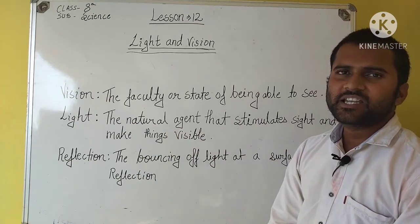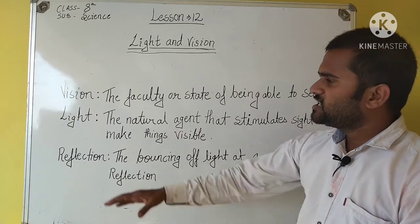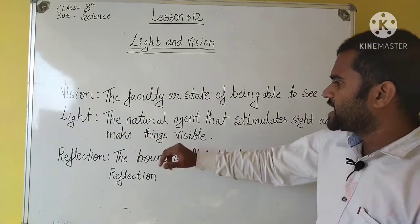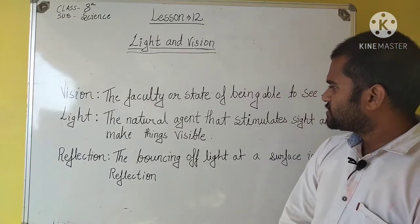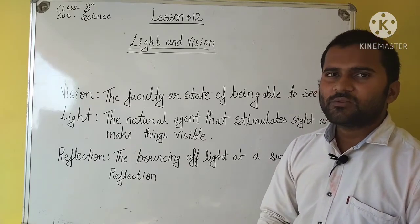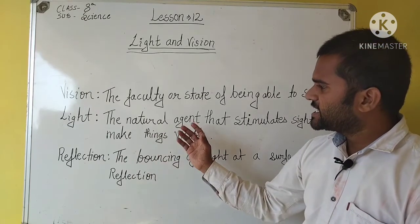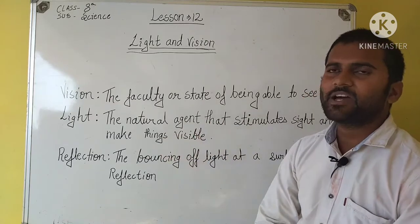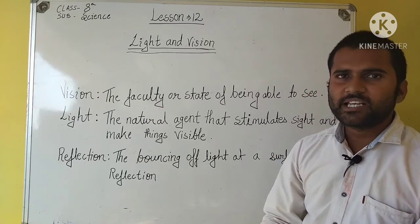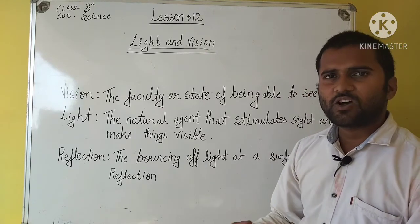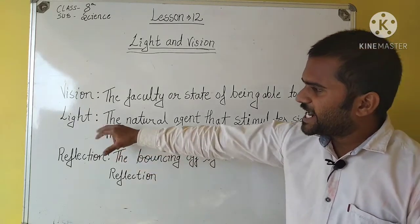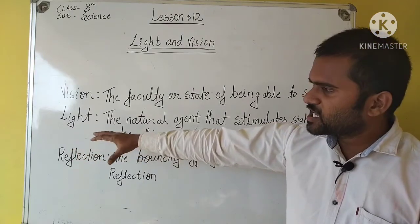Vision in Hindi shabdharth is Drishti. And the next one is the light. Light, the natural agent that stimulates sight and makes things visible. What natural agent, which stimulates sight, which is why things are clear, we can see them. The natural agent means that light is a natural agent which is why things are clear. Light, the Hindi meaning is Roshniya, then Prakash.